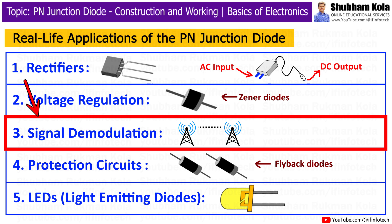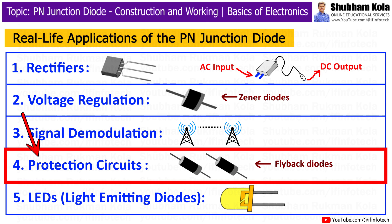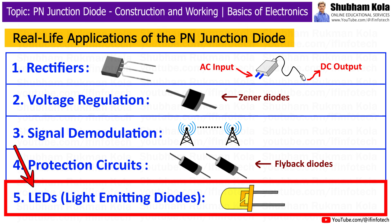Next is Signal Demodulation: in radio receivers, diodes are used to demodulate signals, helping to extract the original information from a modulated carrier wave. Next is Protection Circuits: diodes are often used to protect circuits from voltage spikes. For example, flyback diodes are used in circuits with inductive loads like motors to prevent damage when the current is suddenly interrupted. Finally, a Light Emitting Diode, or LED, is a special type of diode that emits light when current flows through it in the forward direction.